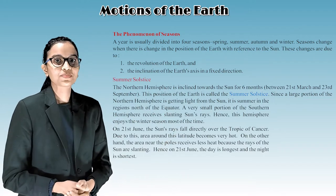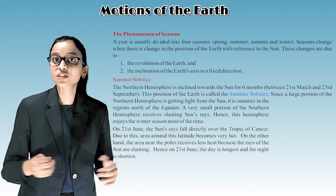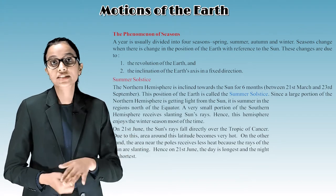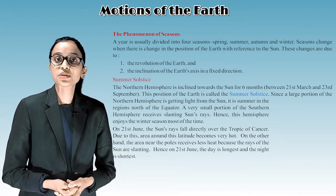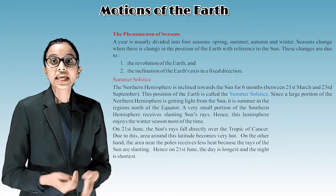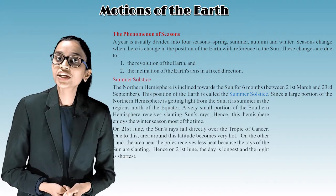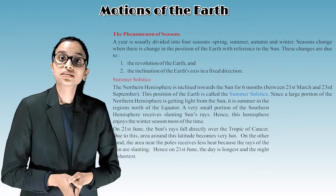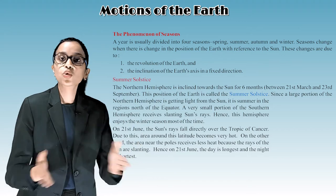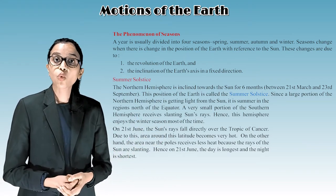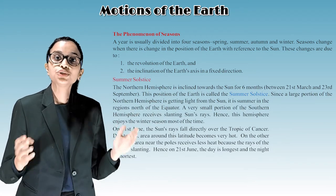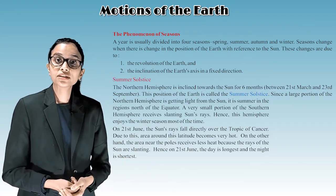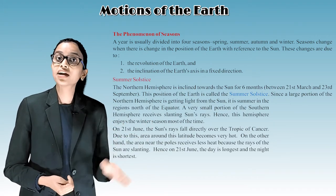Summer solstice: The northern hemisphere is inclined towards the sun for six months between 21st March and 23rd September. This position of the earth is called the summer solstice. Since a large portion of the northern hemisphere is getting light from the sun, it is summer in the region north of the equator. A very small portion of the southern hemisphere receives slanting sun rays, so this hemisphere enjoys winter most of the time. On 21st June, the sun rays fall directly over the Tropic of Cancer, making the area around this latitude very hot.